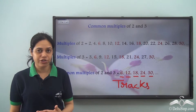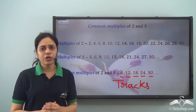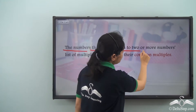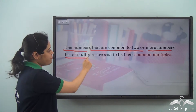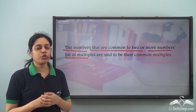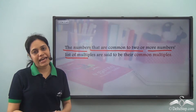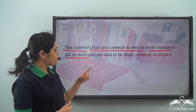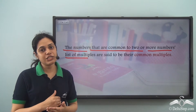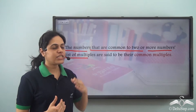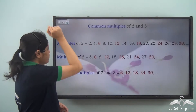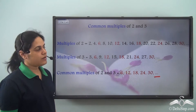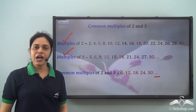So this is how you can solve several problems using common multiples. Common multiples are the numbers that are common to 2 or more numbers' list of multiples. We don't just find common multiples for 2 numbers — we can find them for 3, 4, 5, or any number of numbers. This list of common multiples of 2 and 3 is also endless, because multiples of 2 and multiples of 3 are each endless.